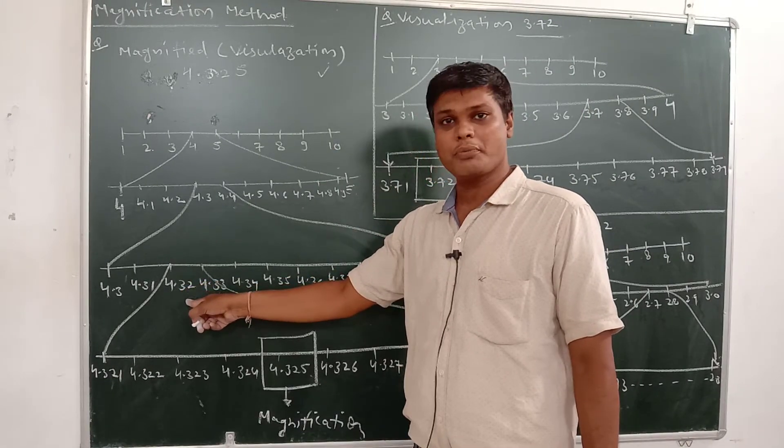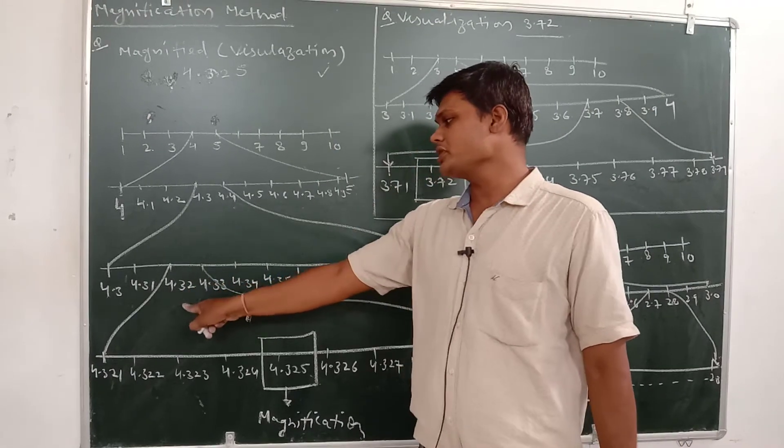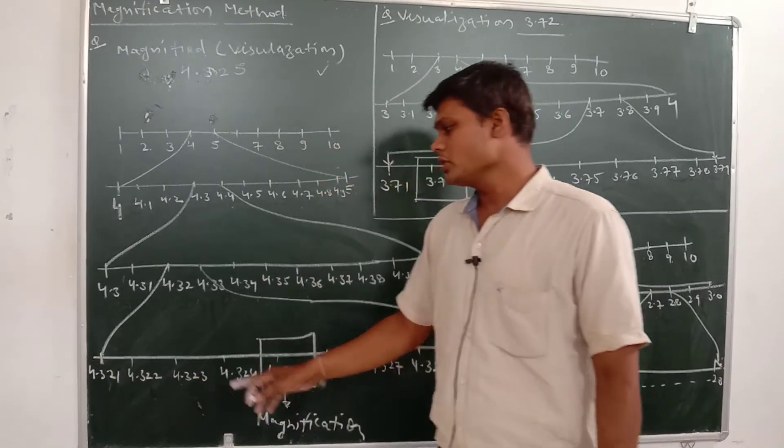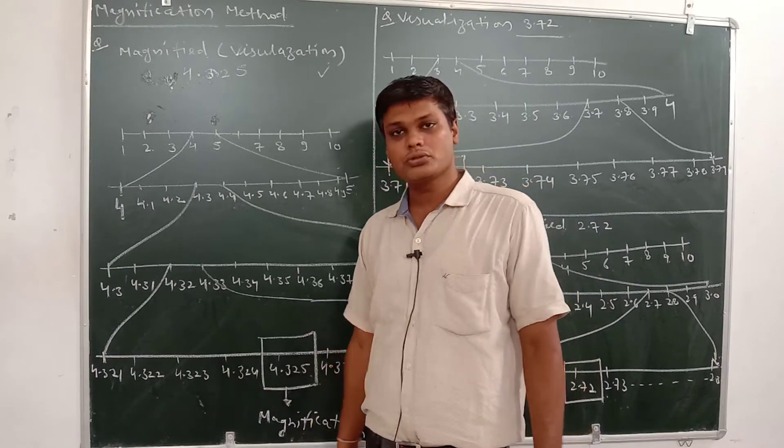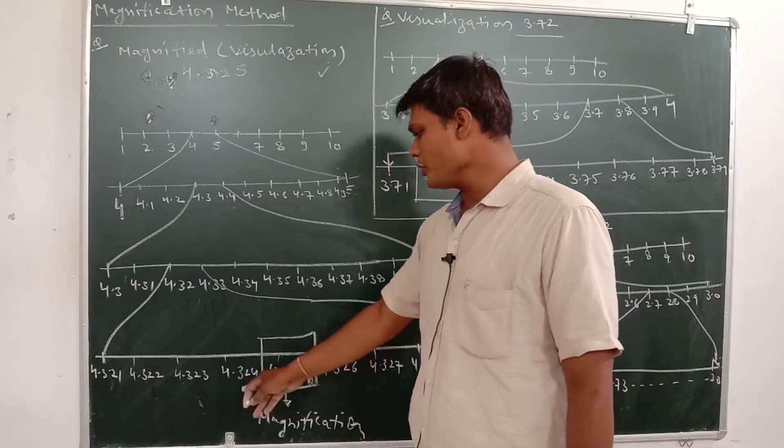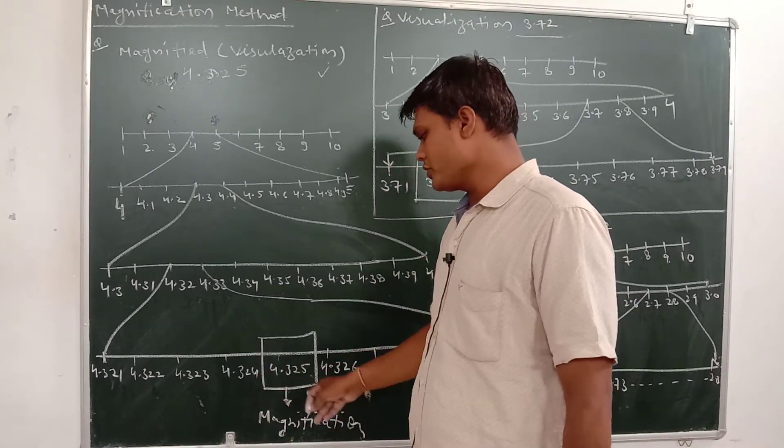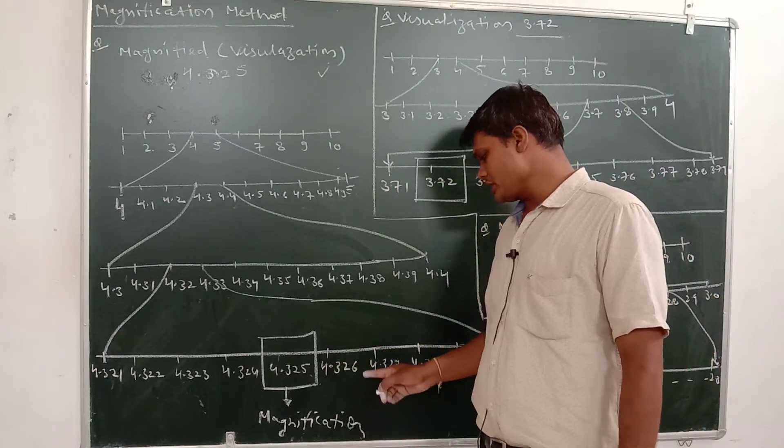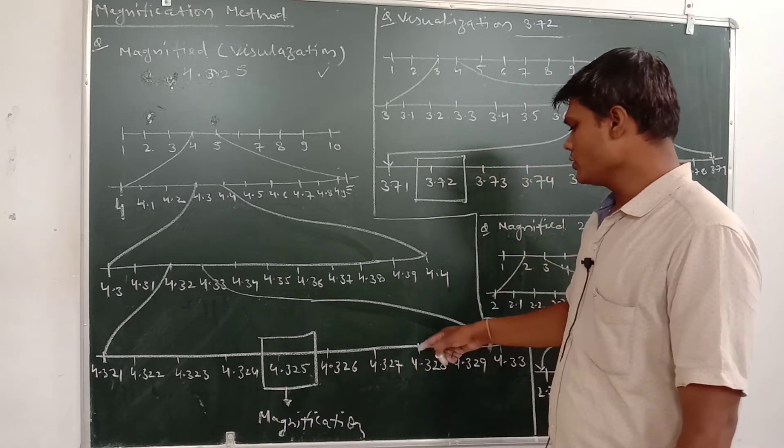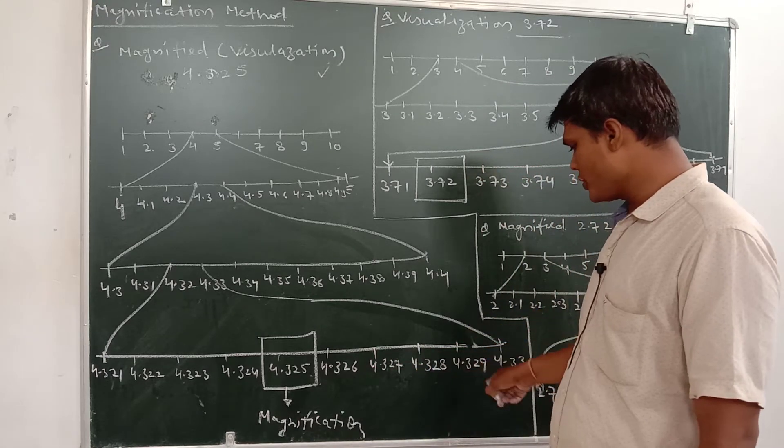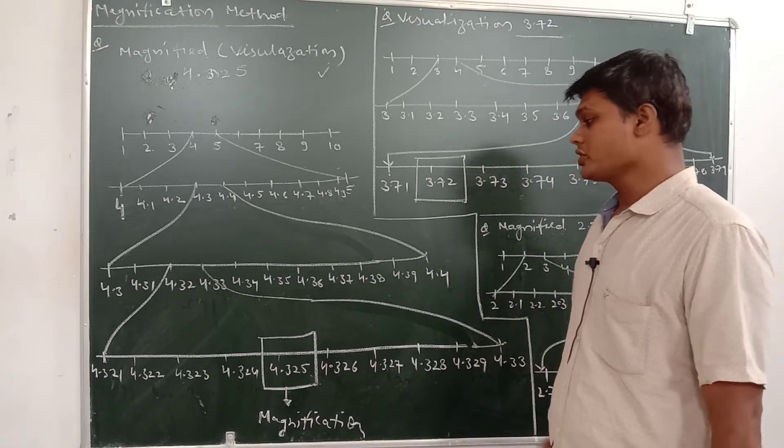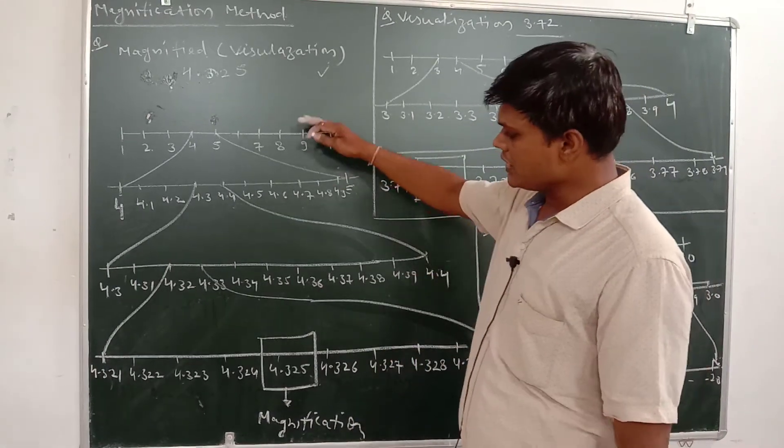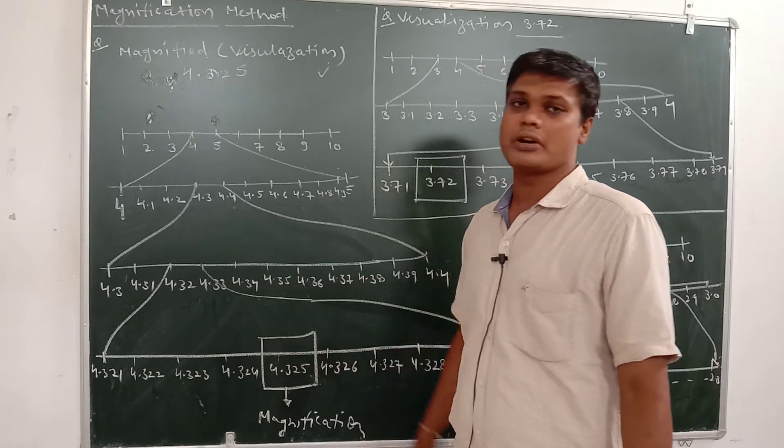Now look, we have 4.325. Where will 325 come? We already have 3 and 2, we need to bring 5 also. So it will come between 4.32 and 4.33: 4.321, 4.322, 4.323, 4.324, 4.325, 4.326, 4.327, 4.328, 4.329, 4.33. So we have magnified 4.325, meaning with these many numbers, when we crossed, we got this number.